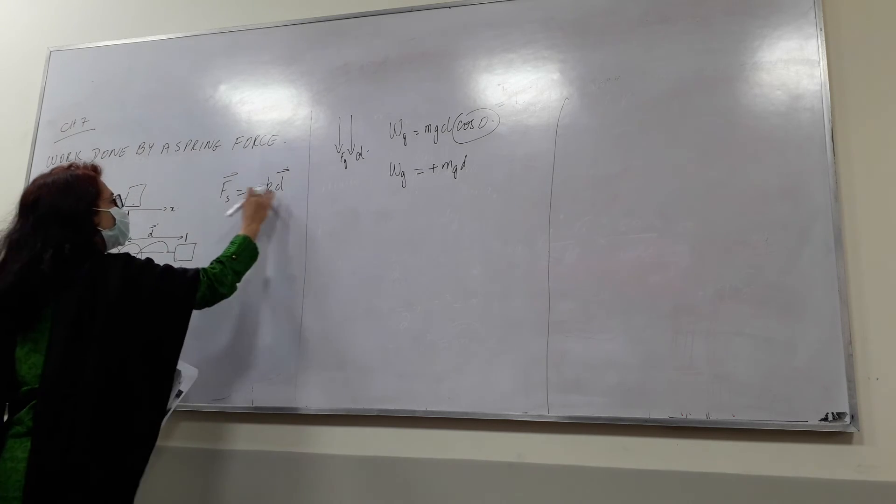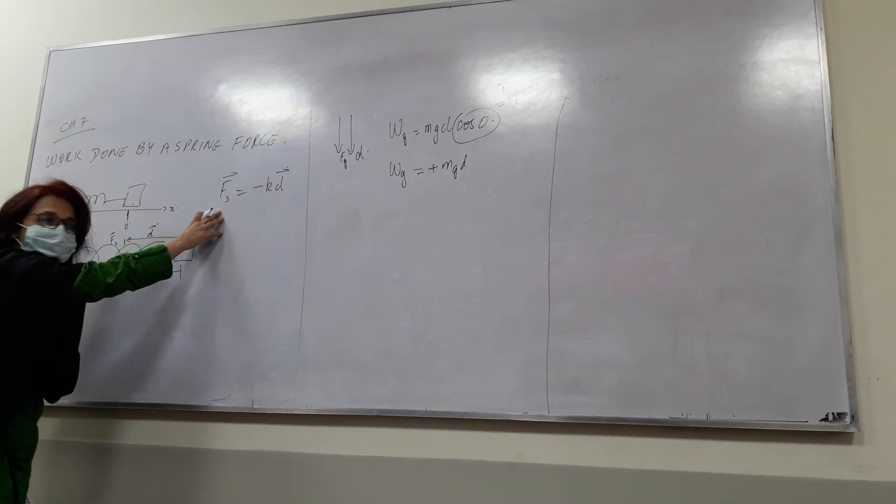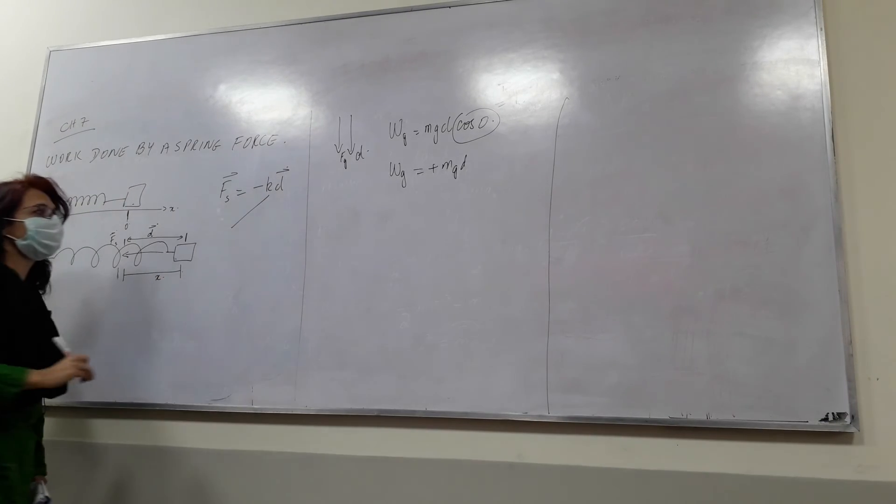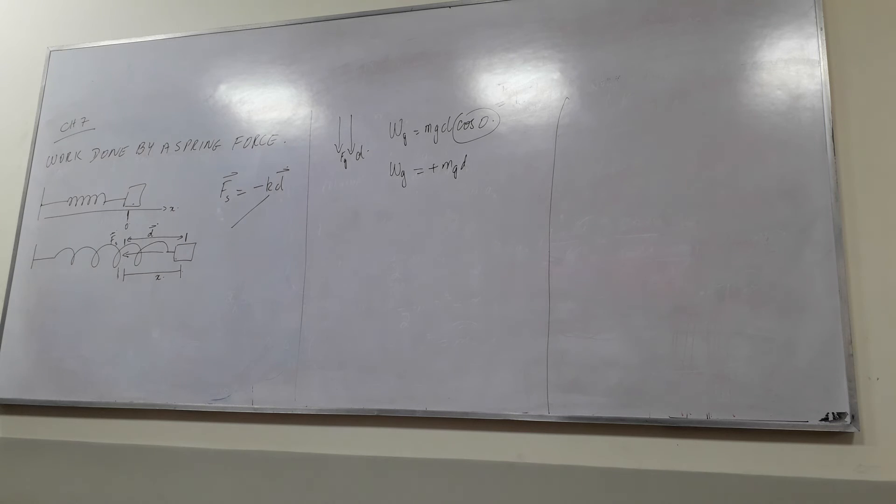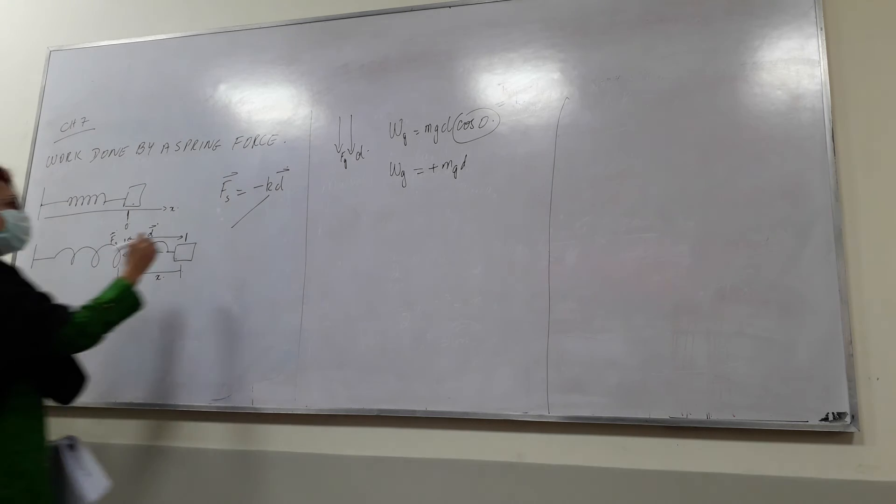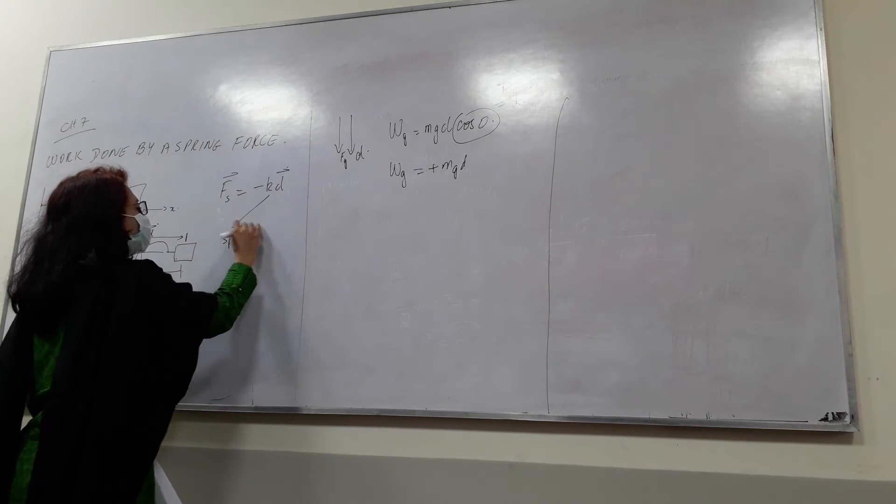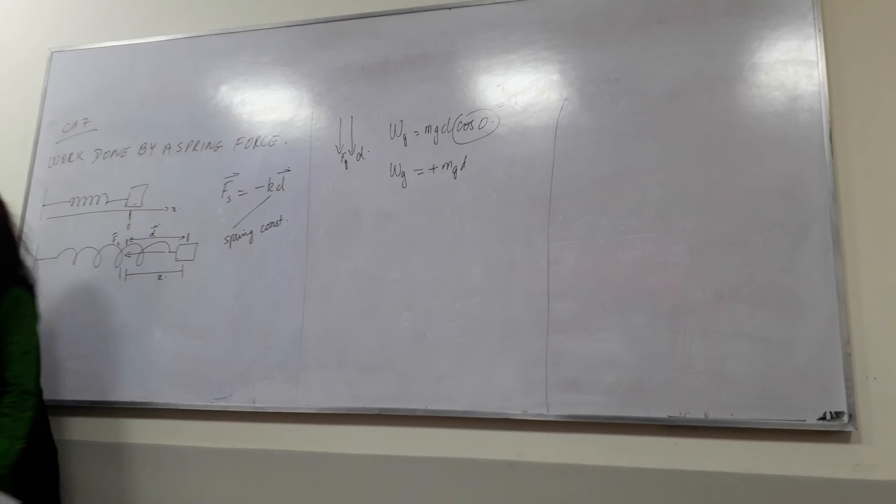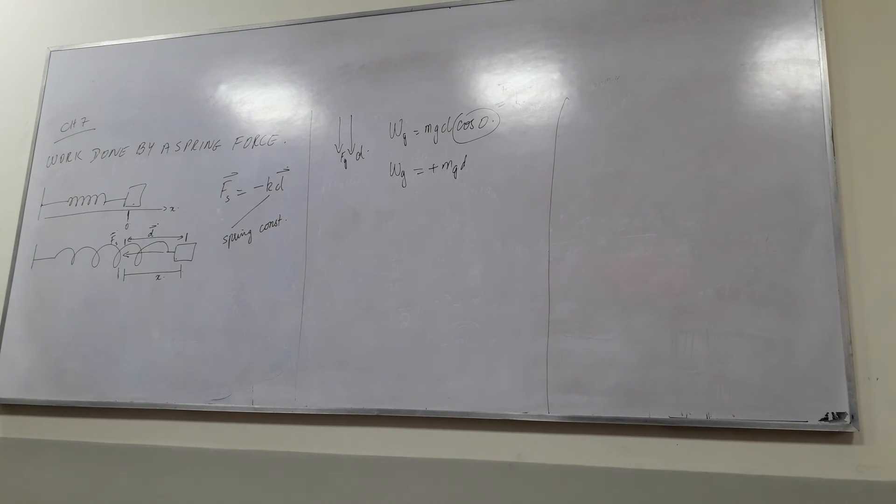And therefore you can write an equation for this force which is Fs is equal to minus Kd. Now Fs is the spring force, it is a vector. D is a displacement and K is a constant which is known as the spring constant. Every spring has a property of how much force it can exert. You know you have different kinds of springs. Some springs exert more force, some springs exert less force, and there are many interesting examples. So anyway, this is known as the spring constant which represents this property of your spring. Why is it negative? It is negative because it is always directed towards the mean position, opposite to the force you are applying.